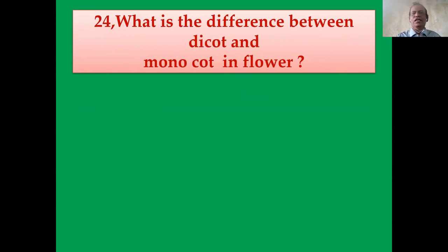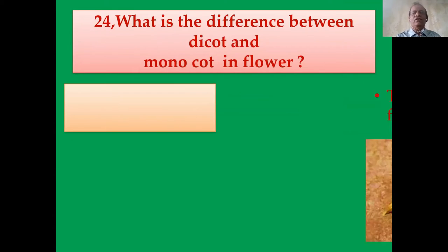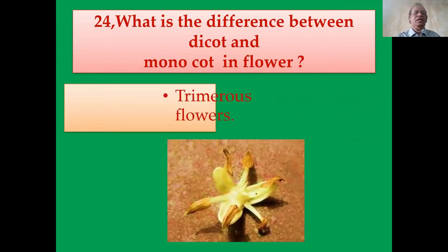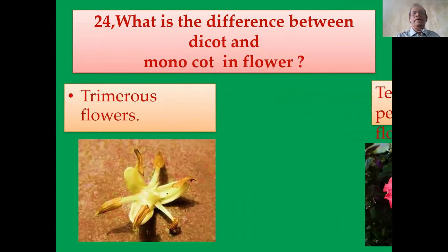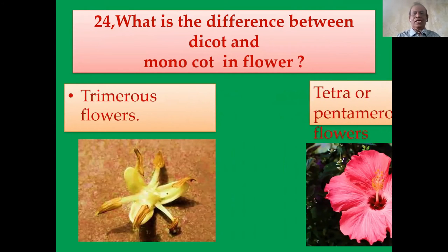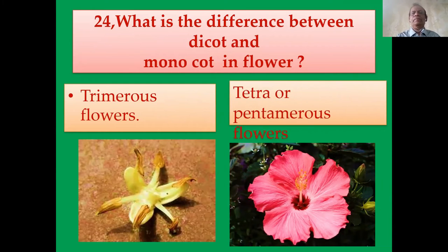What is the difference between dicot and monocot in flowers? Monocot flowers are trimerous — the petals are three in number. Example: coconut flower. In dicot plants, flowers are tetramerous or pentamerous — pentamerous means five petals are found in the flower.